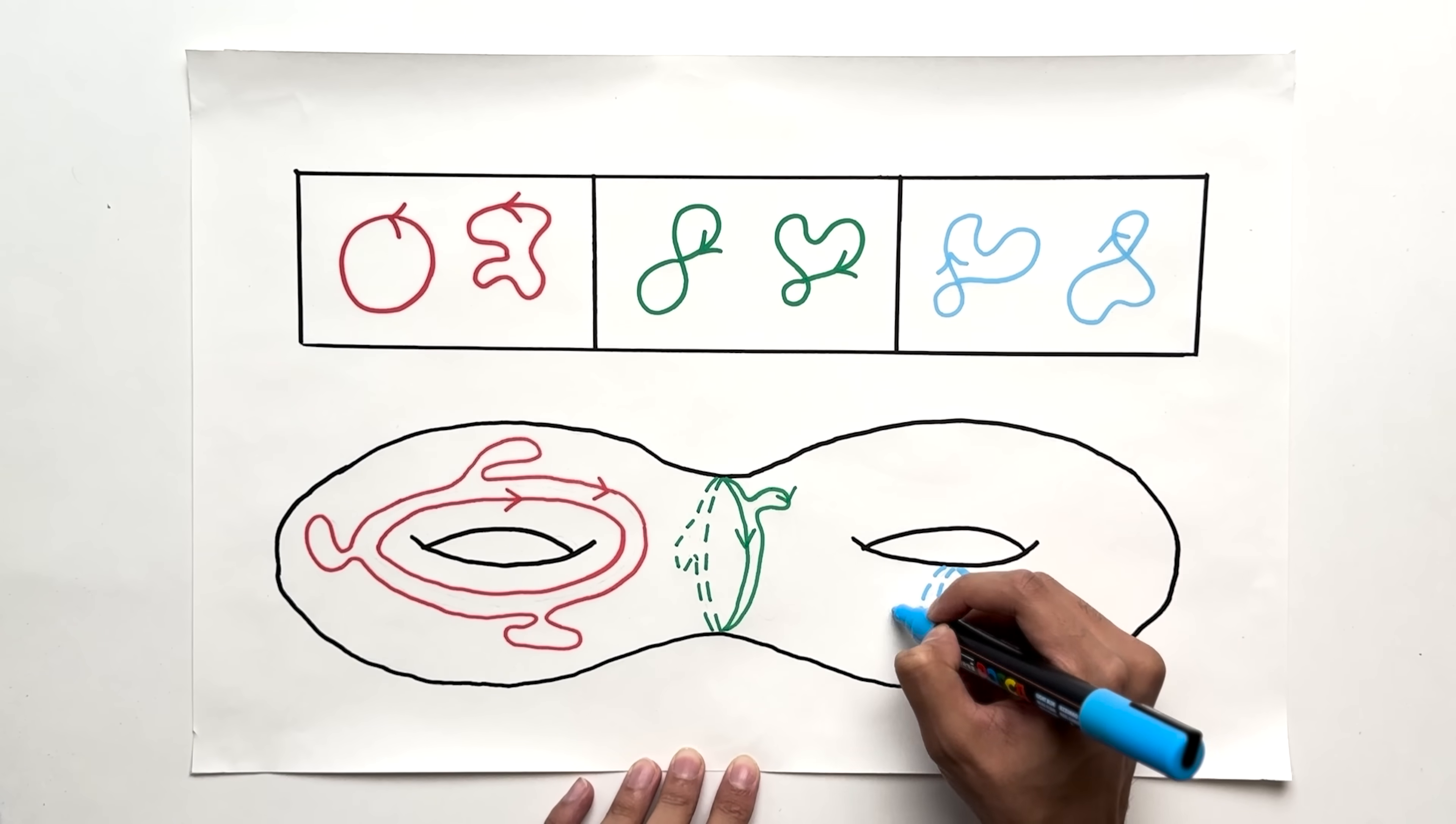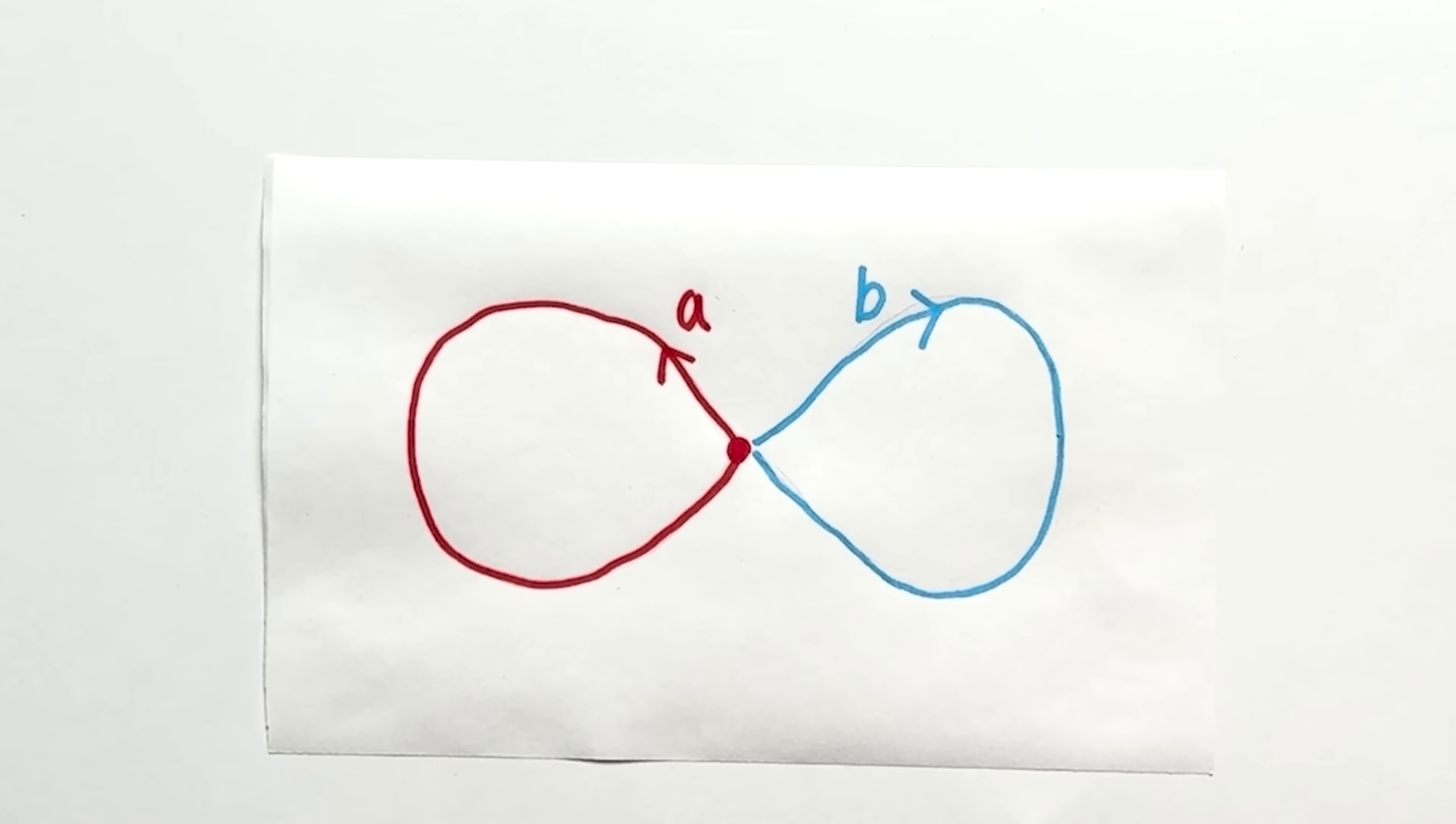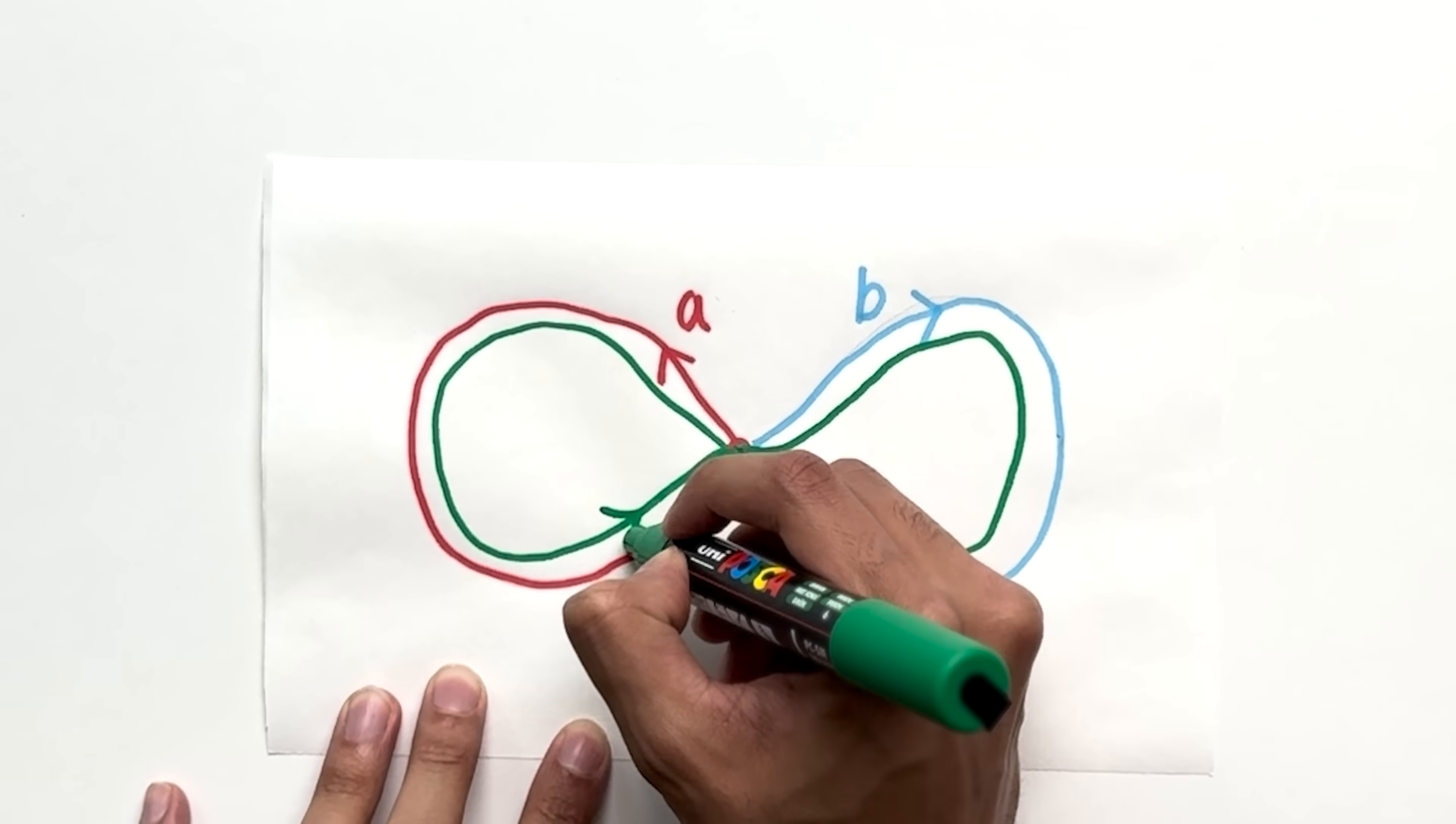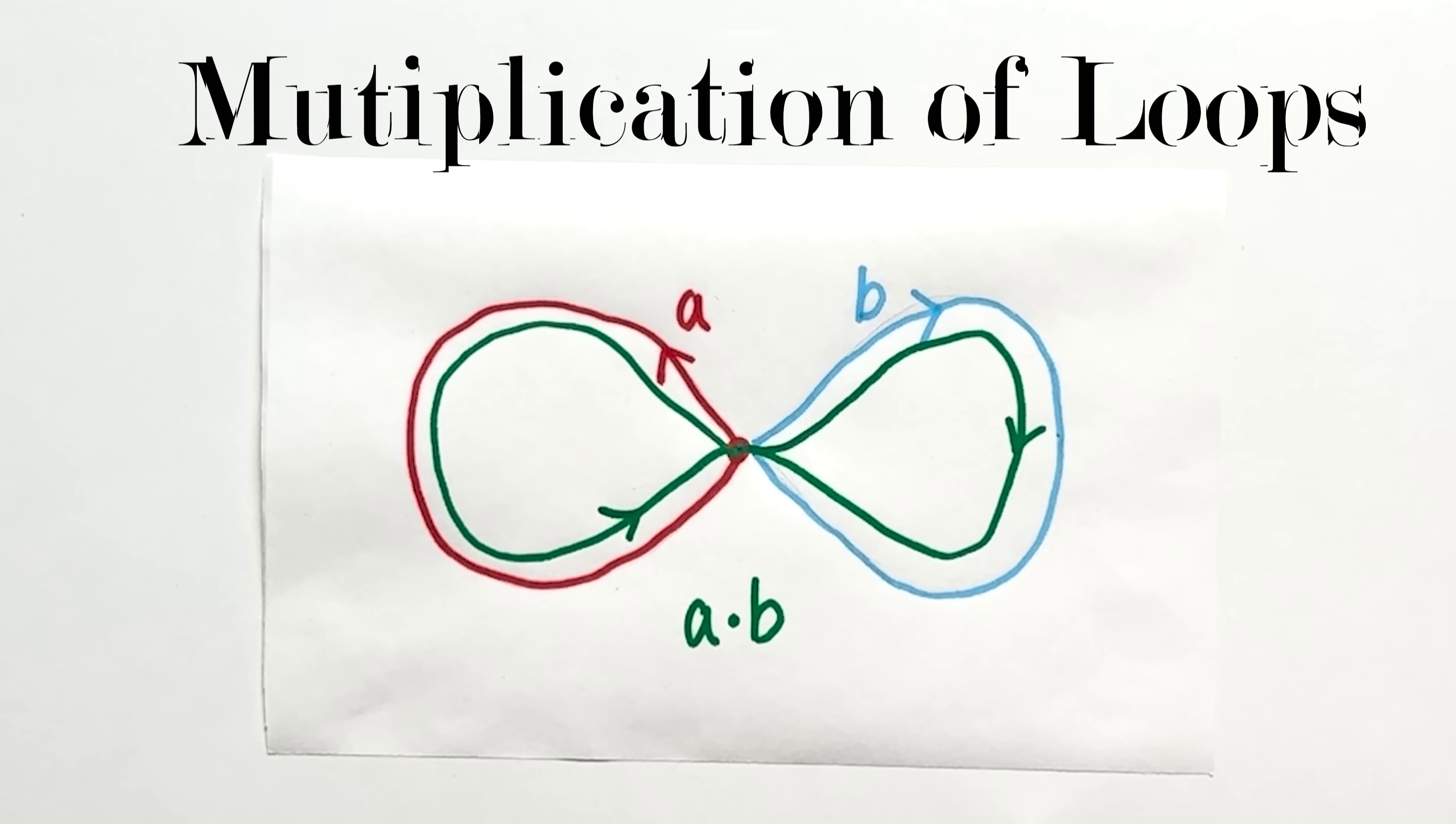We're now going to discuss what it means to multiply two loops. If this loop is called a, and this loop is called b, then the loop a times b is obtained by first traveling along a, and then traveling along b. This multiplication of loops has many of the same properties as usual multiplication.